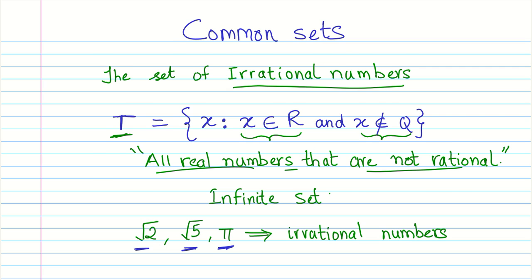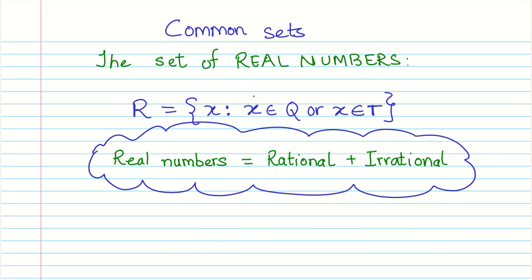Let us look at the next set, the biggest set of all: the real numbers. The set of real numbers is R equals all elements X where X is either a rational number or an irrational number. Essentially, the set of real numbers consists of all the rational and irrational numbers.